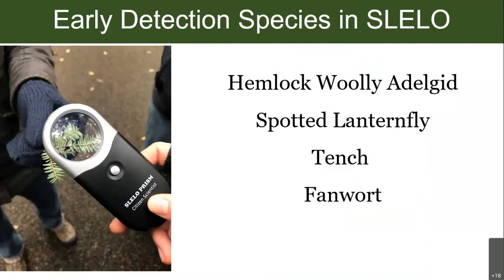We are currently strengthening early detection efforts for four priority species: hemlock woolly adelgid, spotted lanternfly, fanwort, and tench. These species have either not been detected in our region but have high spread potential, or they are present in low enough abundance on the invasion curve to suppress or possibly eradicate. Note that emerald ash borer was one of our early detection species, but since it is now considered established in the SLILO region, efforts have shifted from early detection to suppression and control management strategy.